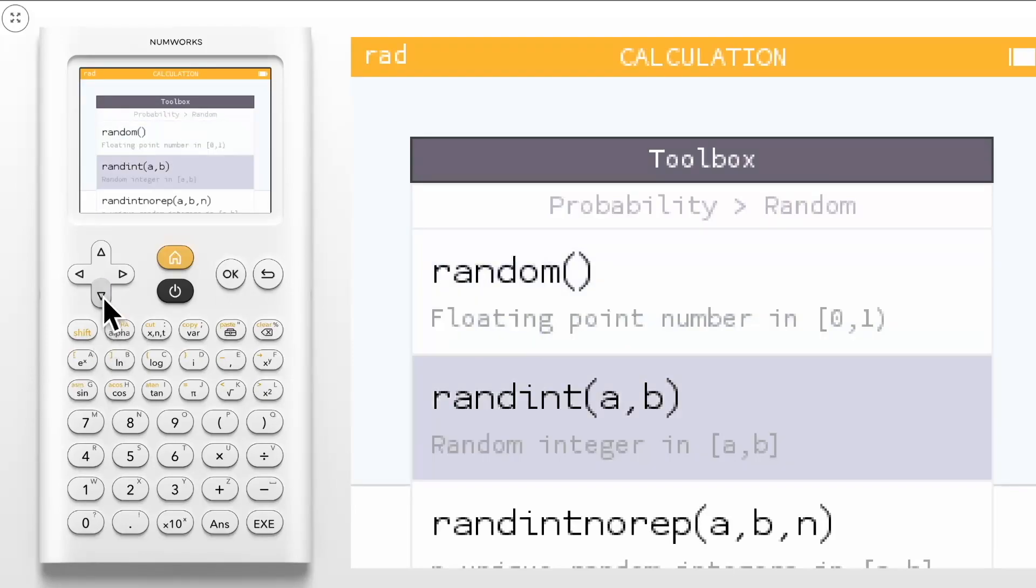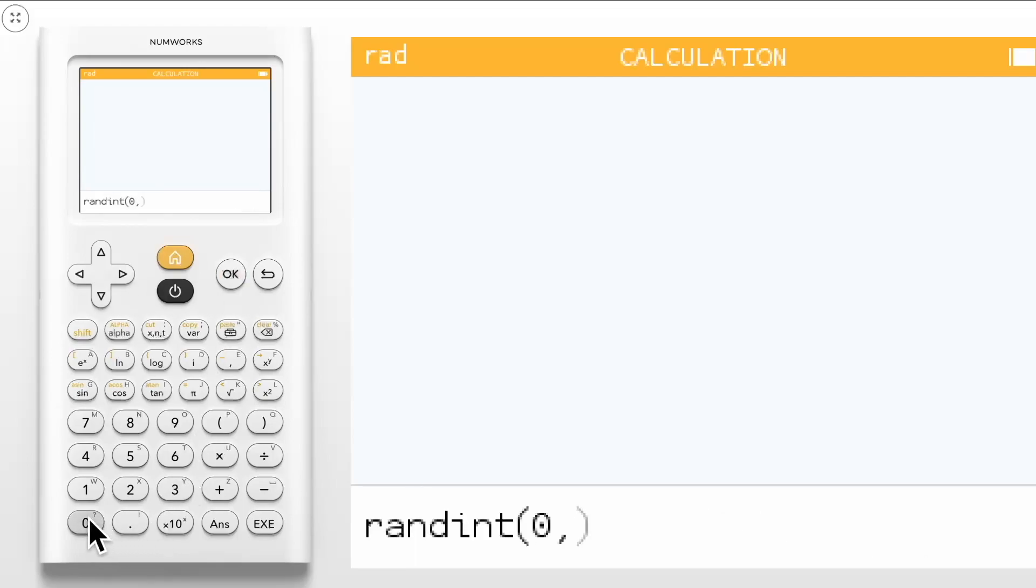The second option will give you a random integer between two numbers. For example, if we wanted to choose one number between 0 and 5, we would choose randint and input 0, then navigate past the comma using the right arrow and input 5. Click Execute to get the random integer.